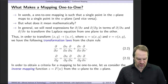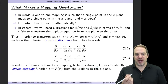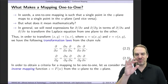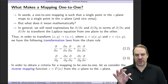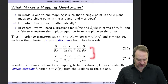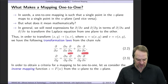In order to determine if a mapping is one-to-one, let's consider the inverse mapping — that's the capital F of w, going from the w-plane back to the z-plane. We look at these two equations as two equations for two unknowns, where the unknowns are ∂/∂u and ∂/∂v.